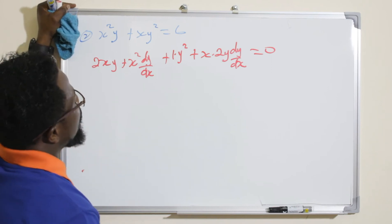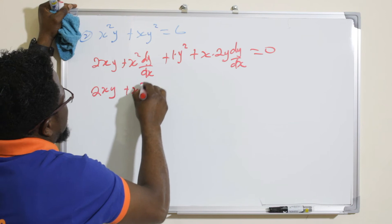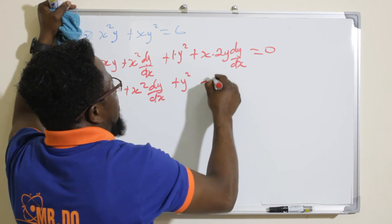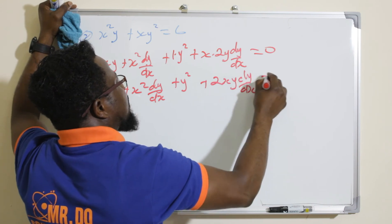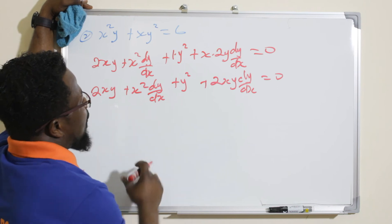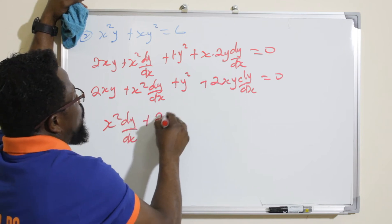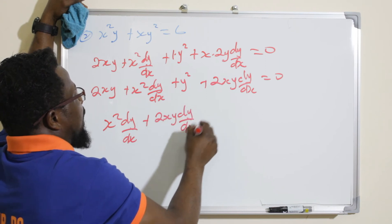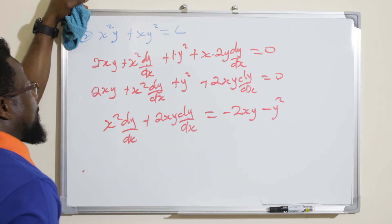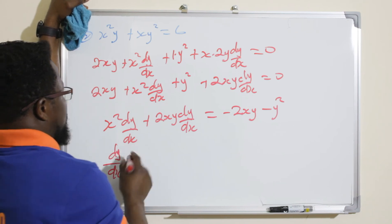Expanding: 2xy + x² · dy/dx + y² + 2xy · dy/dx = 0. Collecting dy/dx terms on one side: x² · dy/dx + 2xy · dy/dx = −2xy − y².